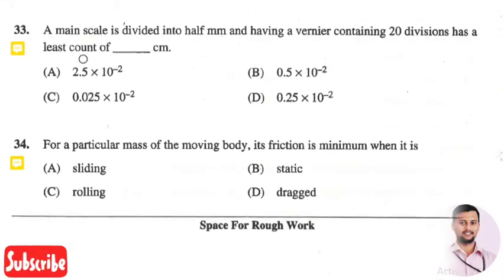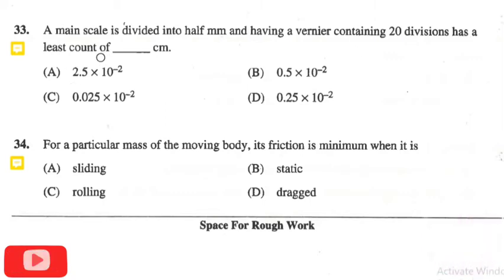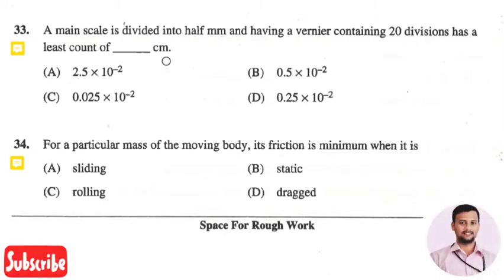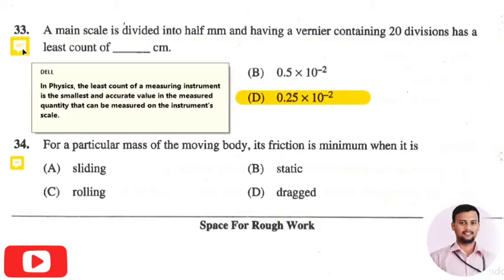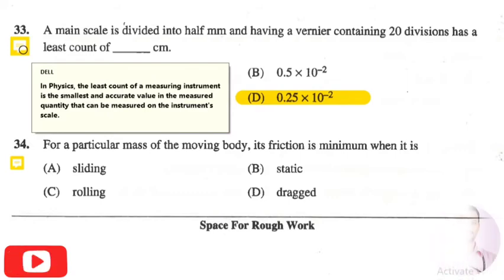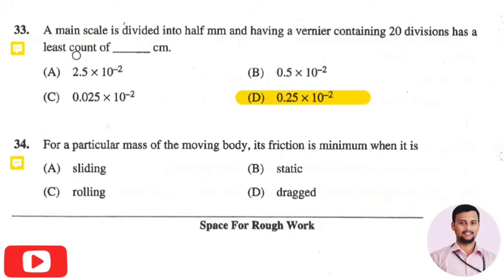The next question is: a main scale divided into half-mm divisions and a vernier containing 20 divisions has a least count of — in centimeters, the right answer is option 4: 0.25 × 10⁻² cm. In physics, the least count of a measuring instrument is the smallest accurate value in the measured quantity that can be resolved by that instrument.